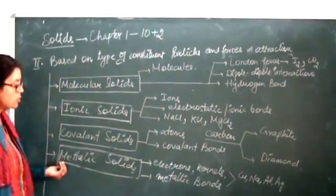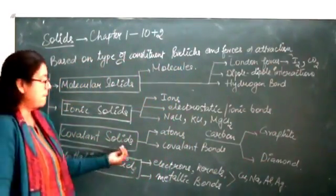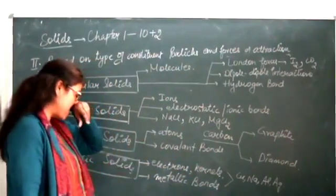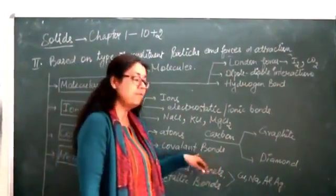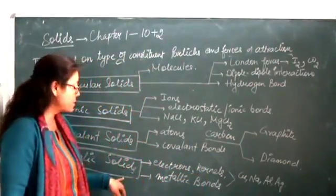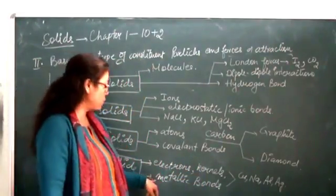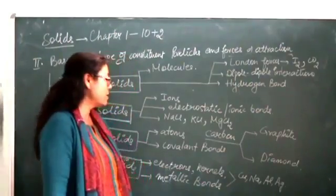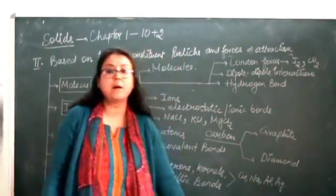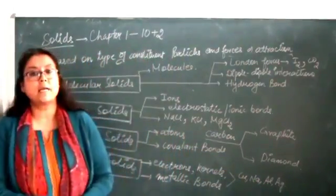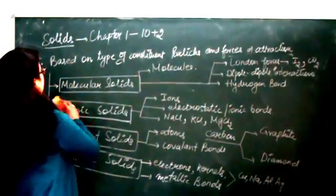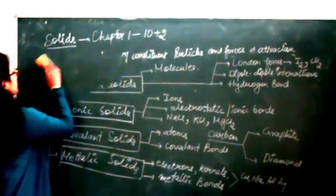Then we come to metallic solids. Metallic solids have negatively charged electrons in a sea of positively charged kernels, and they have a special kind of bond between them known as metallic bonds. All metals come under this category. This concludes the first section of chapter 1.